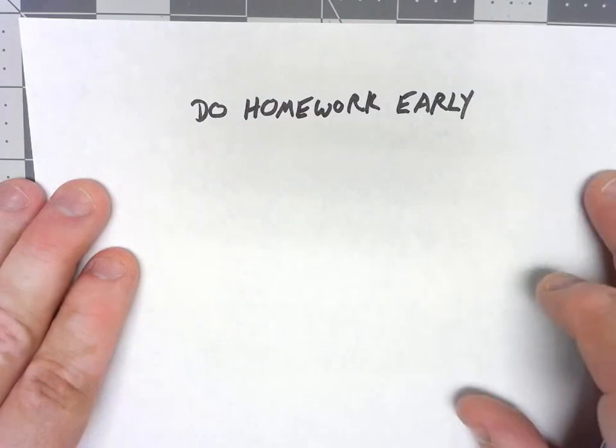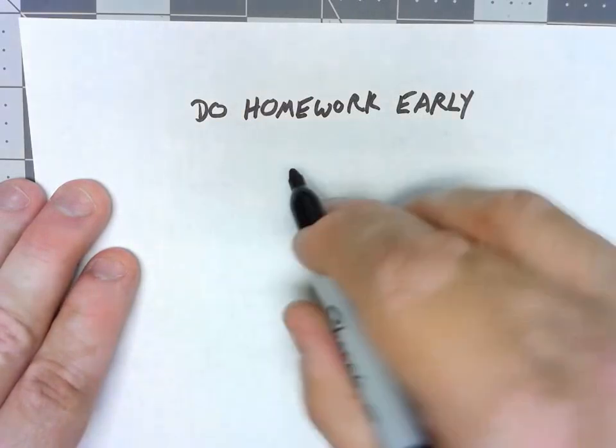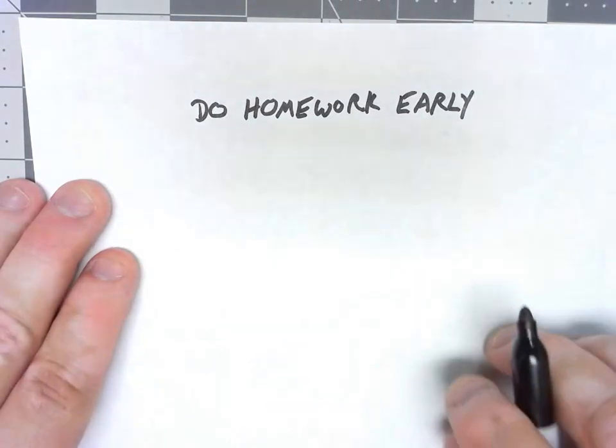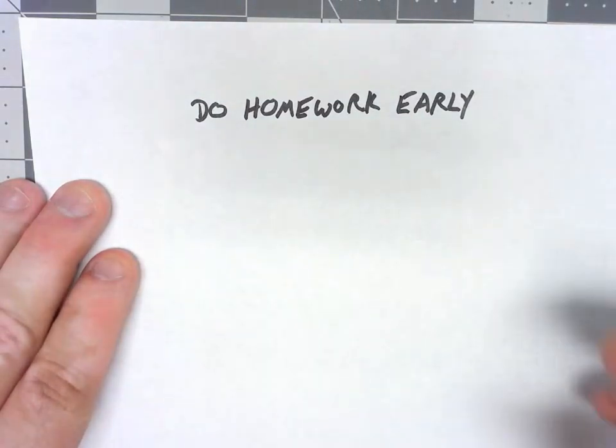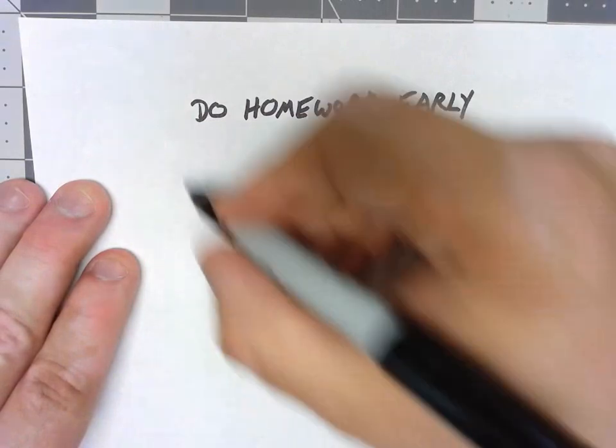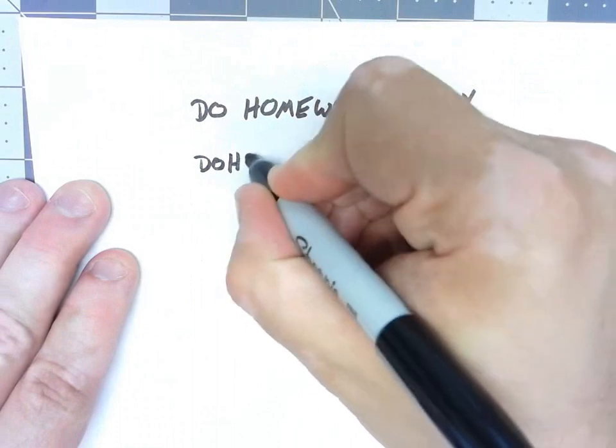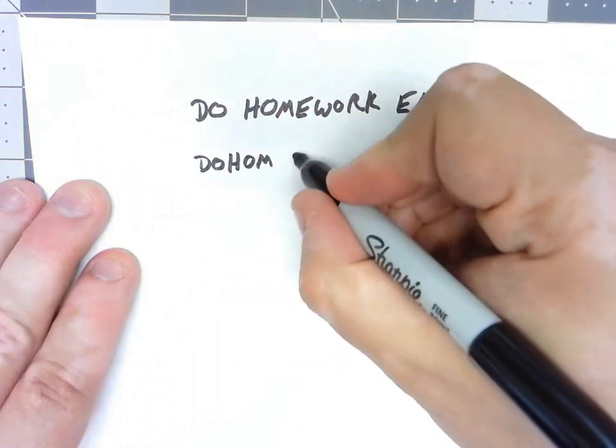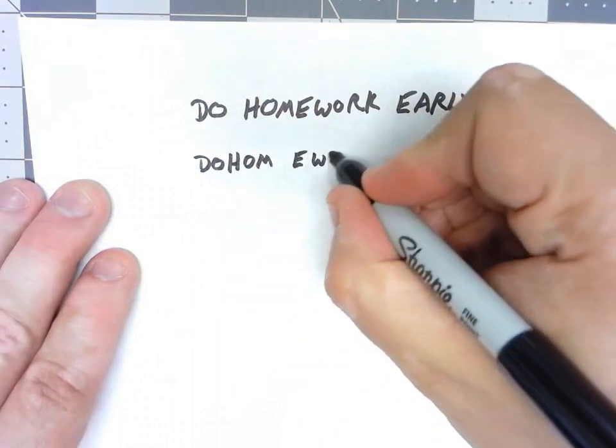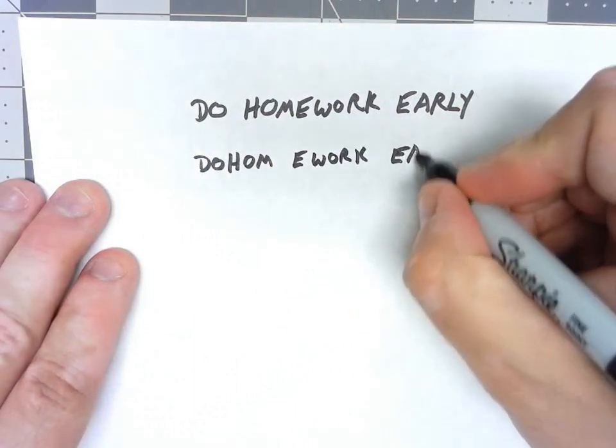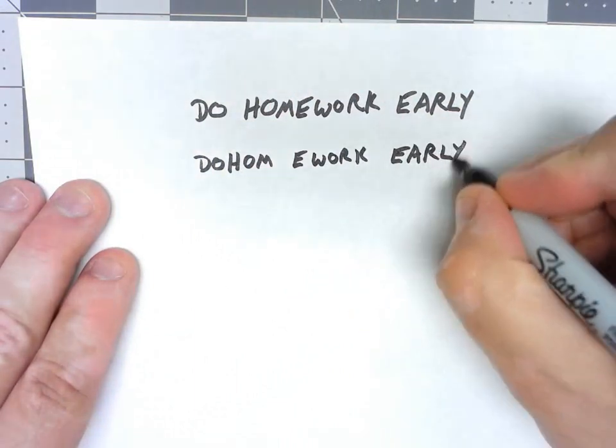What I'm going to do is I'm going to chunk this up, ignoring spaces, chunk this up into blocks of five letters. So I have D, O, H, O, M, E, W, O, R, K, and then E, A, R, L, Y.